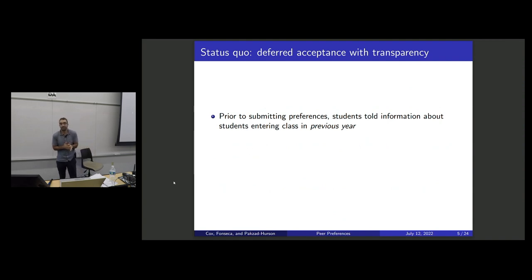And so really what I want to talk about today is what I think of as the status quo that's done in a number of school choice markets. This is both in centralized school choice markets. I'll talk a little bit about the school choice market in New South Wales, Australia. China's school choice market for university admission is also the same way. Even decentralized markets like the U.S. are this way, where prior to submitting their preferences or applying, students are told information about the student body in the previous year.